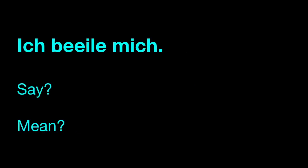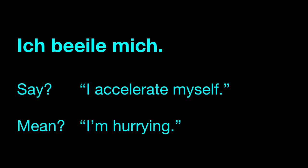Ich beeile mich. Simple sentence, three words. Ich beeile mich. I am doing something to myself — I'm accelerating myself, which is a way to say I'm in a hurry. Ich beeile mich. Mich is the reflexive — I'm doing this to myself, I'm accelerating myself.